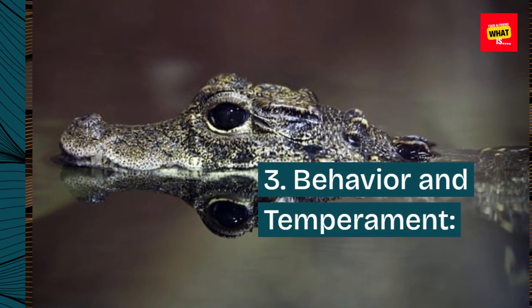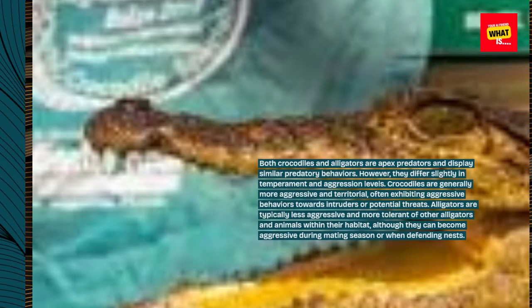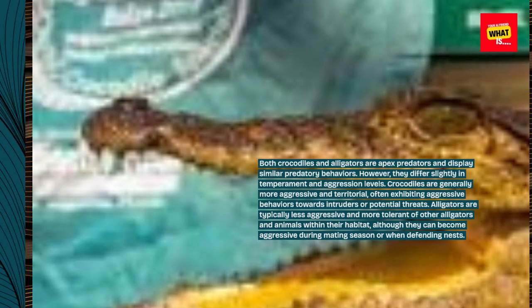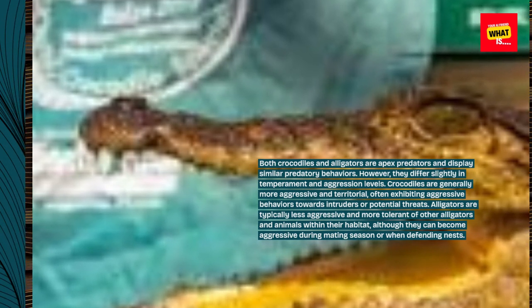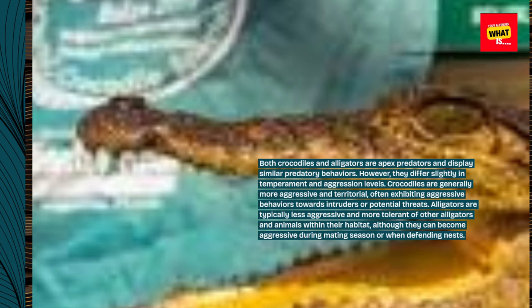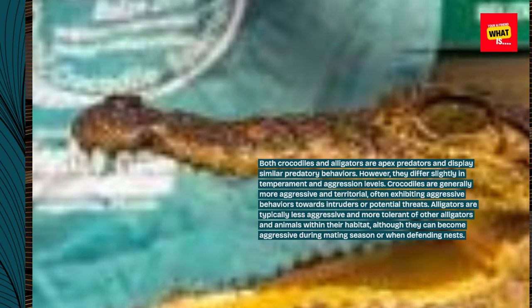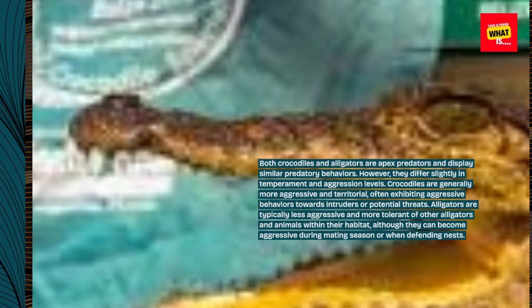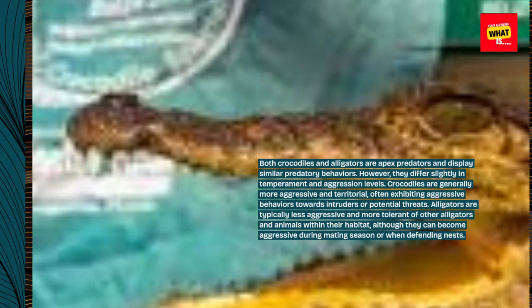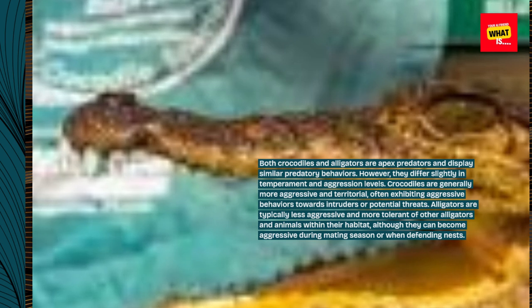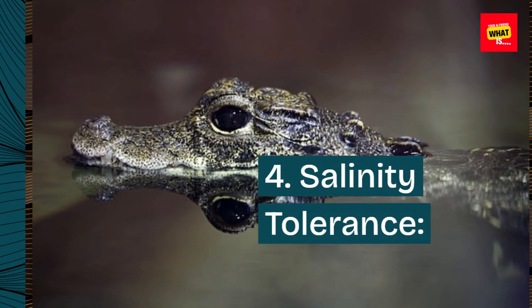Behavior and Temperament: Both crocodiles and alligators are apex predators and display similar predatory behaviors. However, they differ slightly in temperament and aggression levels. Crocodiles are generally more aggressive and territorial, often exhibiting aggressive behaviors towards intruders or potential threats. Alligators are typically less aggressive and more tolerant of other alligators and animals within their habitat, although they can become aggressive during mating season or when defending nests.